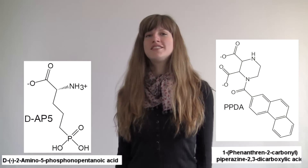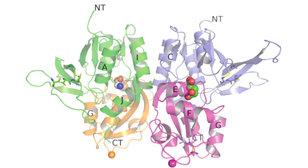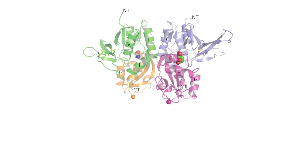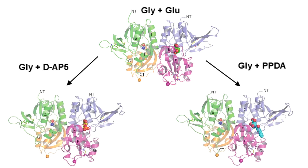Rather than co-crystallising the receptor-ligand complex, we used an alternative approach which involved soaking of crystals that had been formed in the presence of glutamate and glycine against a buffer containing the same components as the crystallisation buffer, but with glutamate exchanged for the antagonists. With this high-resolution crystallography, we were able to identify antagonist binding sites and gain a detailed understanding of their different binding modes and the conformational changes they induce.